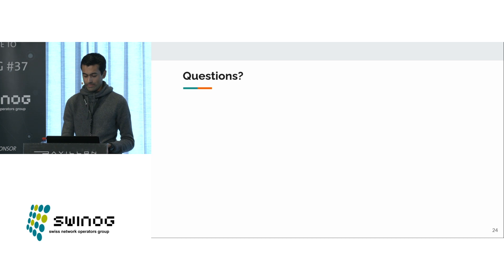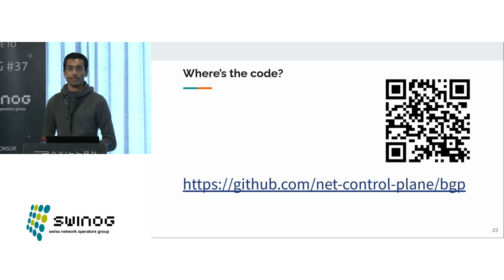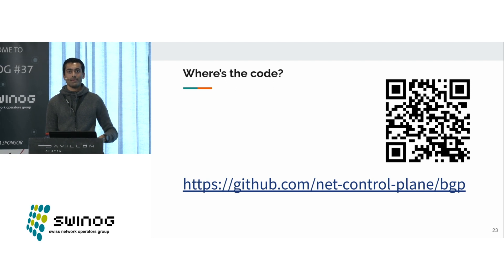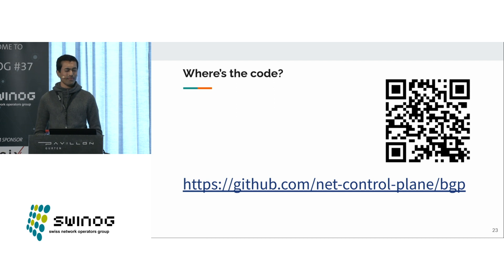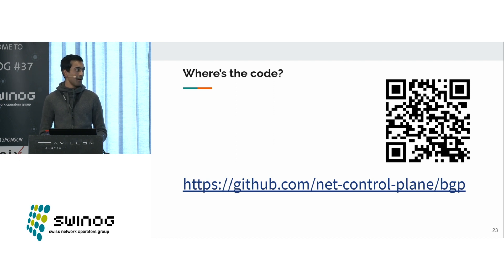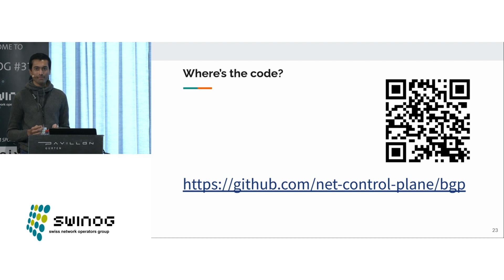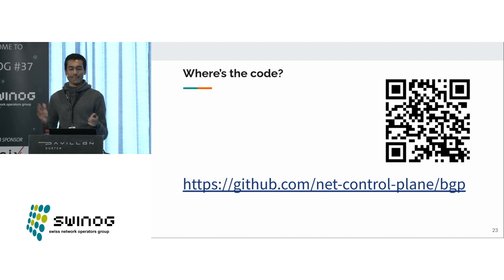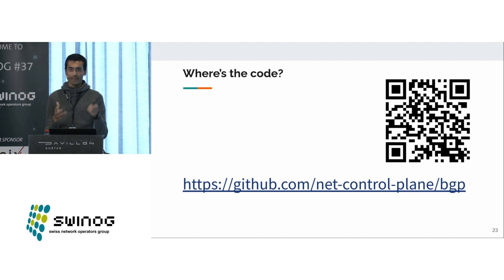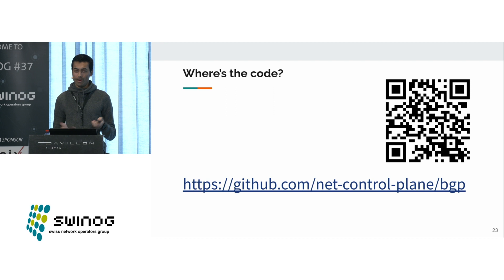Question from the audience: to export the RIB you use gRPC, but there is an IETF standard called BMP. Why are you using gRPC instead of BMP, and do you foresee supporting BMP? The speaker responds: I had seen BMP but didn't fully understand what it was used for. I chose gRPC because I was familiar with it and had written some other automation before to receive routes over gRPC. I'd like to support BMP — I looked at the standard and it was a bit long, so I went with the quickest way to make it work. Also, experimenting on my home network means I don't have internet connectivity when my thing is broken. File a bug or feature request on the GitHub repo for BMP support and we can add it to the roadmap.